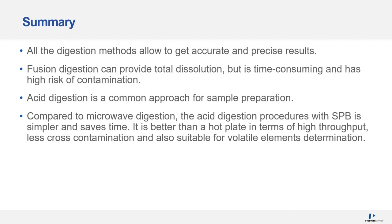In summary, all the digestion methods allow you to get accurate and precise results — you just need to pick the right method for your particular elements of interest. Fusion digestion can provide total dissolution but is time consuming, at high risk of contamination, and not suitable for volatile elements. Acid digestion is a common approach; the sample preparation block is similar to microwave digestion but saves time and is better than a hot plate for high throughput, less cross-contamination, and volatile elemental determination.